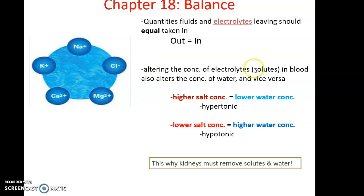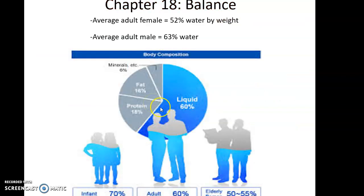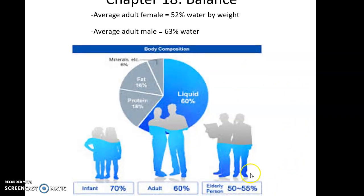Water is a critical component of the human body. The average adult female is about 52% water by weight, and the average adult male is about 63% water by weight. If we look over time, we see that infants are much higher in water content, and then adults dry out a bit, and the elderly dry out even more.